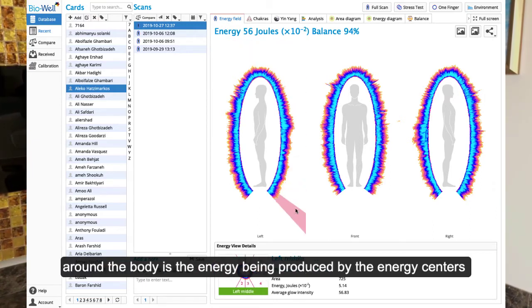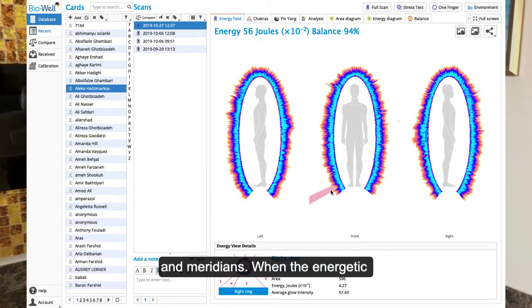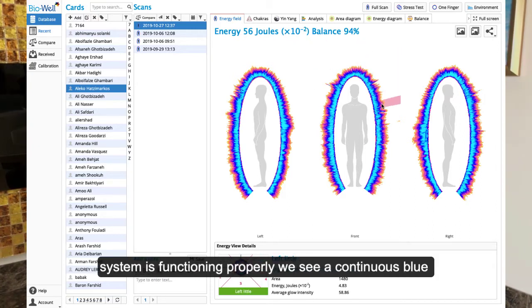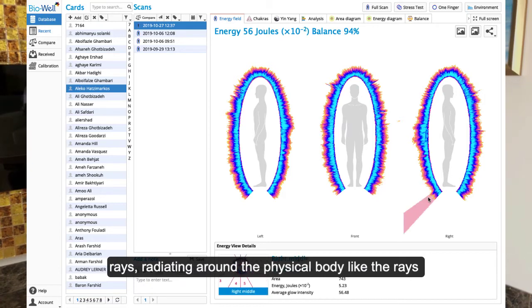The blue field around the body is the energy being produced by the energy centers and meridians. When the energetic system is functioning properly, we see continuous blue rays radiating around the physical body like the rays of the sun.